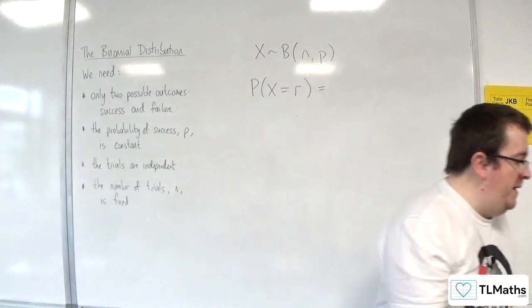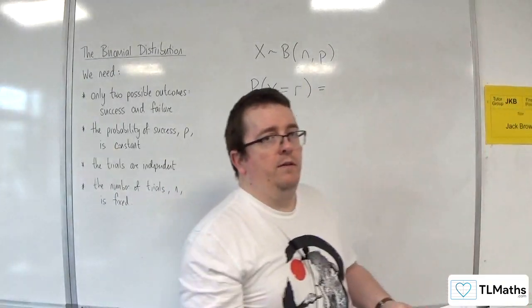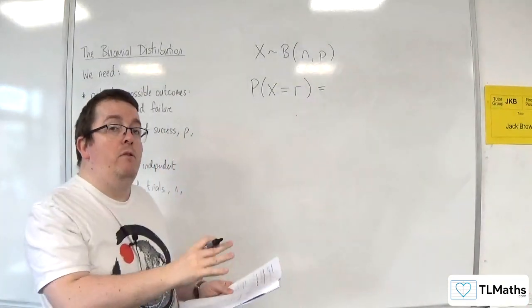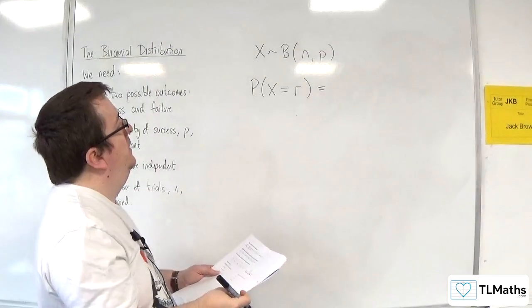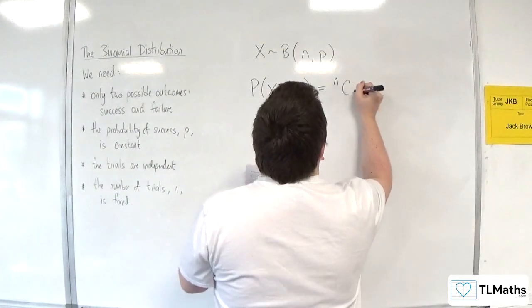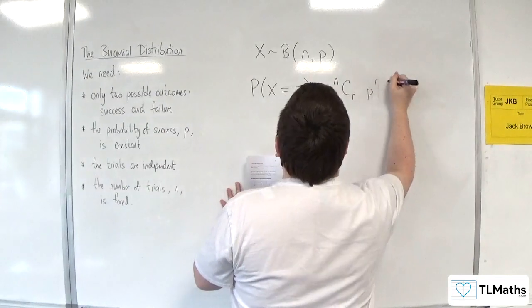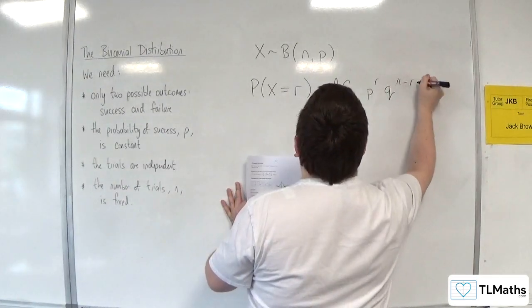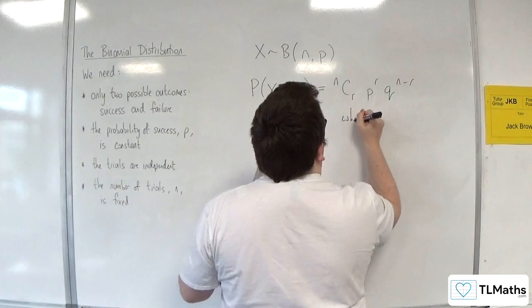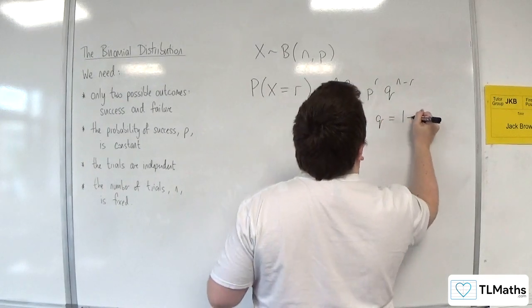It's written in a way in the MEI formula booklet in the A-level maths section at the start. So I'll write that down here. So nCr P to the R Q to the N minus R, and that's where Q is 1 minus P.